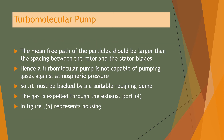The mean free path of the particles should be larger than the spacing between the rotor and stator blades. Hence, a turbo molecular pump is not capable of pumping gases against atmospheric pressure and must be backed by a suitable roughing pump. The gas is expelled through the exhaust port, represented as 4 in the figure, and 5 represents the housing.